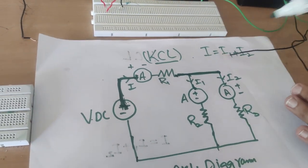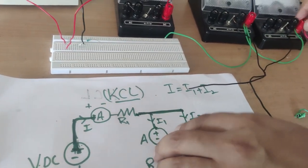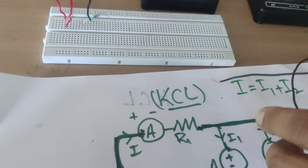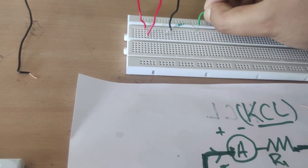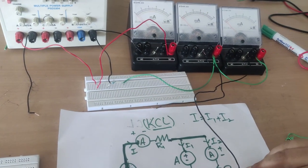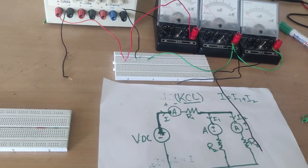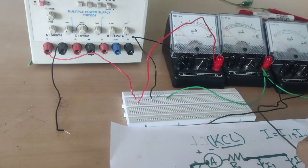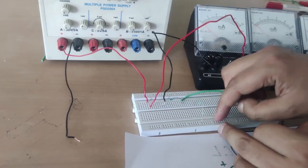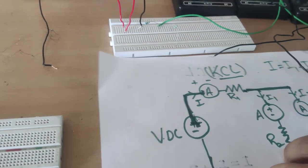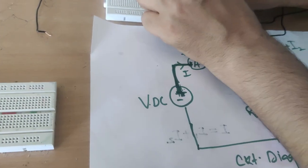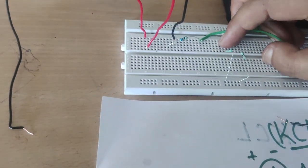I will connect the positive of those ammeters to the node that also connects to resistor R1. Now for resistors R2 and R3, they are connected in parallel. I will connect both resistances here — R2 and R3 share the same node. Then I connect the upper ends of the resistors to the circuit node here.